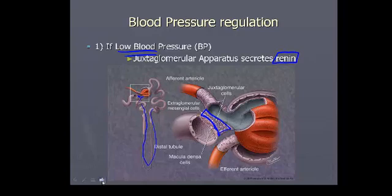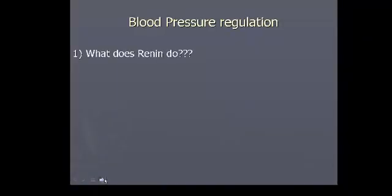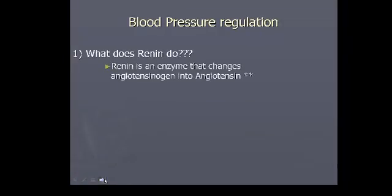Renin has the ability to convert angiotensinogen into angiotensin. It acts as an enzyme — just like HCl helped activate pepsinogen into pepsin — angiotensin is the active form.